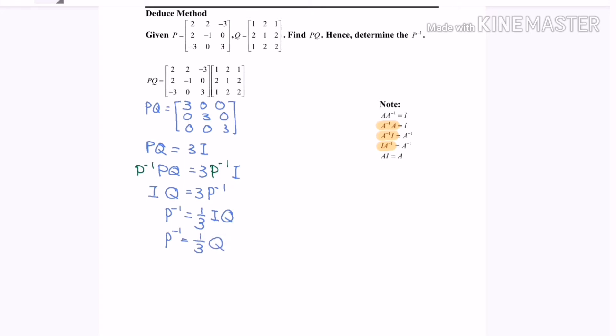So finally P inverse equals 1 over 3 multiply with the matrix Q. My answer for P inverse will be 1 over 3, 2 over 3, 1 over 3. Next we are going to use the calculator to check the answer.